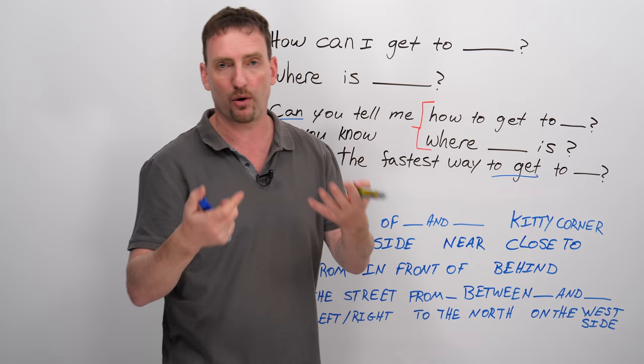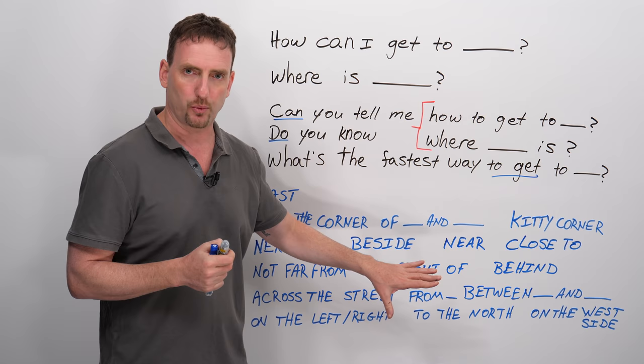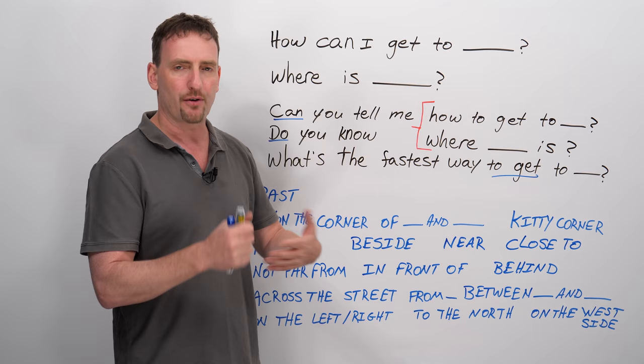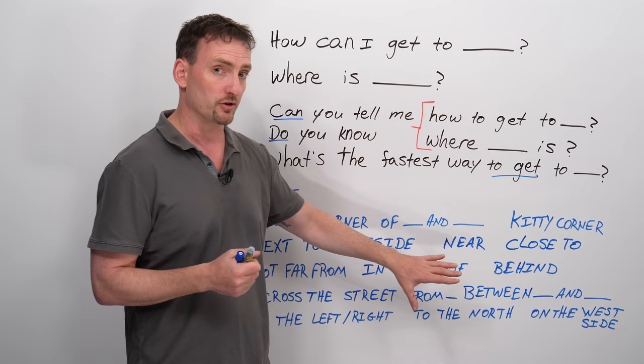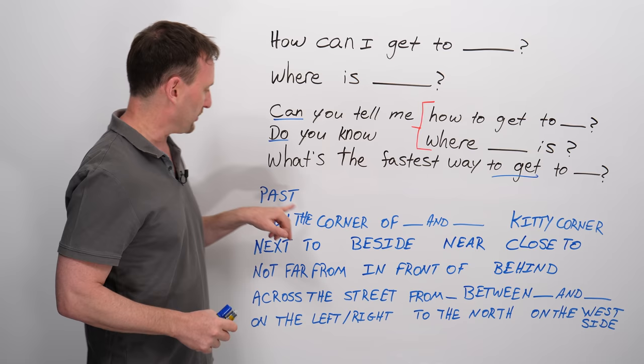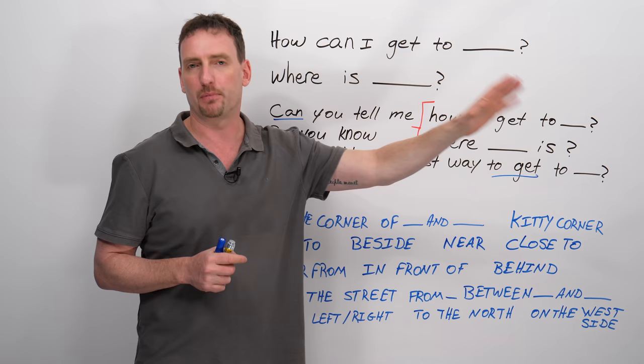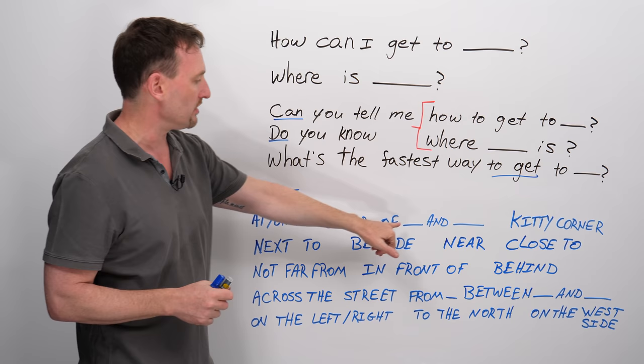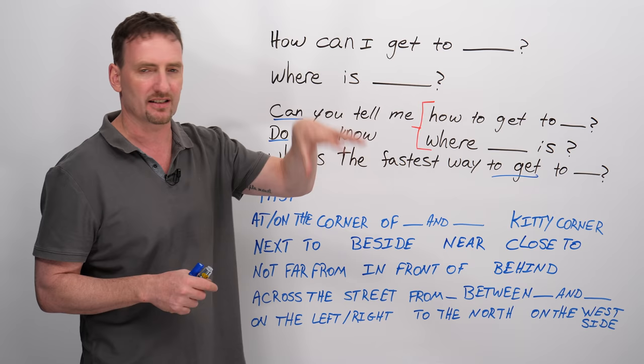Now, very important that you study these words. All of these are prepositions of place. You must understand how they are used and when they are used in order to understand directions. So when someone is explaining it to you, they're going to use all of these words. I kind of ran out of room, so I put past at the top. Past, go past the first building, and the second building is the one you want. So past means, like, after. At or on the corner of A Street and B Street. At the corner means general area, on the corner means a specific corner. Both of these will work just fine.